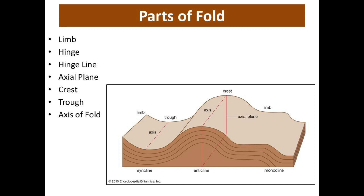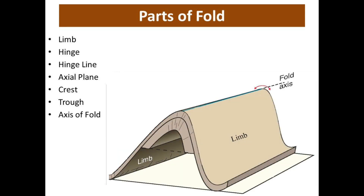We will discuss all these parts one by one. First of all, the limb. The limb is the sides of a fold, or you can say the flanks of a fold are called limbs. These are the sloping sides of a fold from top to bottom.